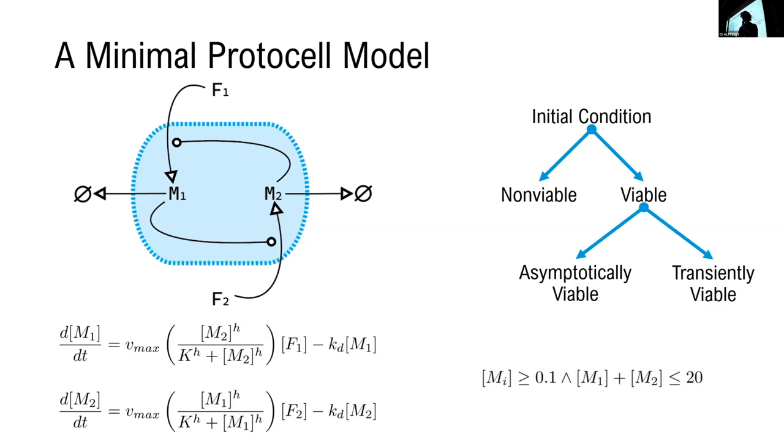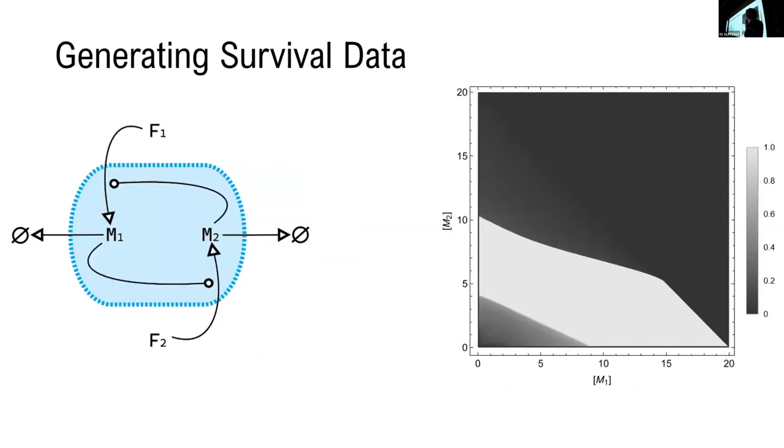To get an idea for what the survival space looks like in our protocell, the first thing we do is sample a million evenly distributed initial conditions and numerically integrate them for 200 arbitrary time units, and then we look to see the normalized percentage of that time that was survived.